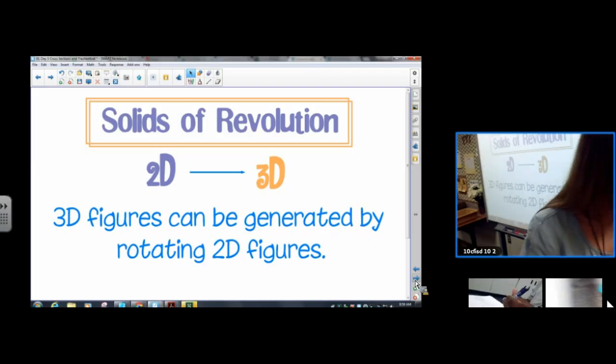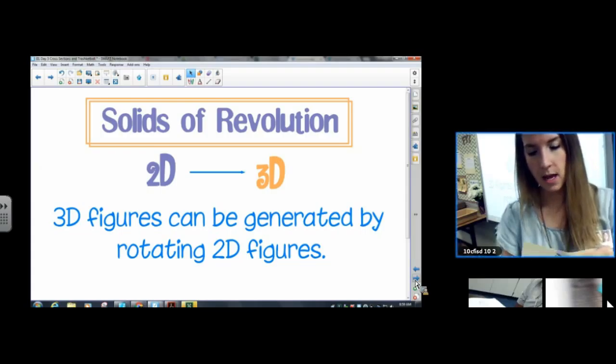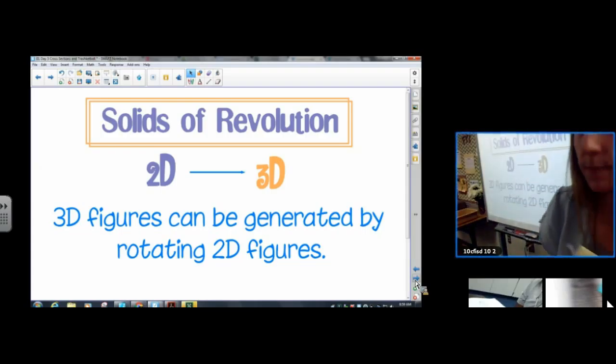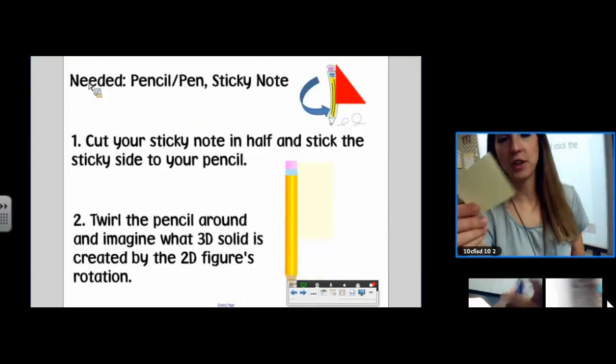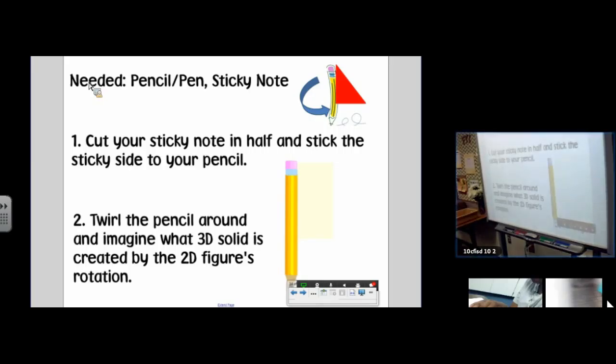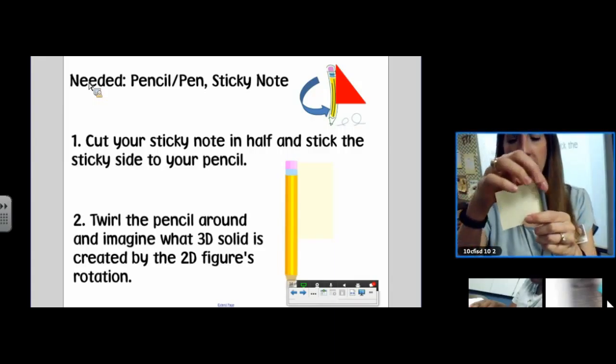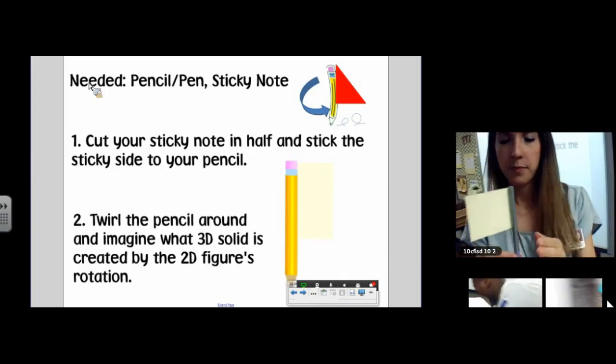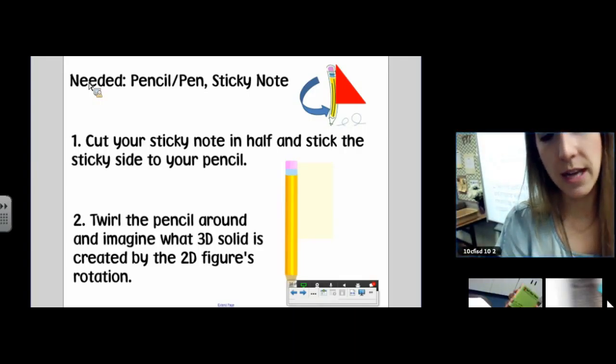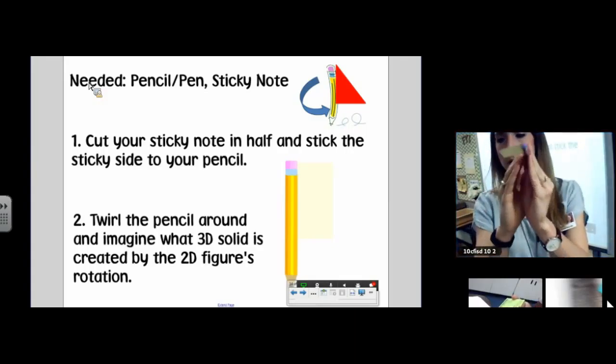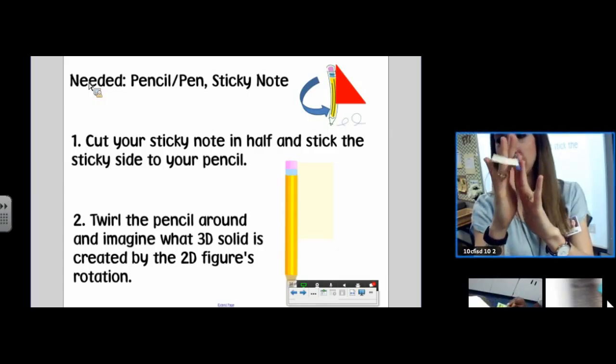So we're going to take our sticky notes, and we're going to revolve them around a pencil. So if your sticky note's large, you can cut it in half. If your sticky note's regular size, mine was like a long sticky note, so I cut mine in half. But if yours is just a regular one, go ahead and stick that sticky note to your pen or pencil. This one, it works as good as you make it work. But anyways, you're going to take that sticky note, and you're going to rotate it about your pencil. Here, let me do this. And try to imagine what solid you're creating when you rotate 360 degrees.